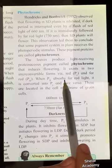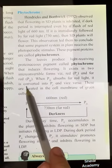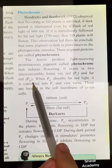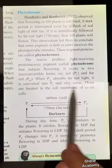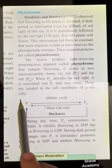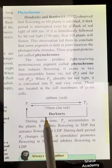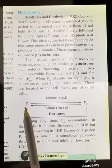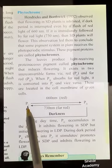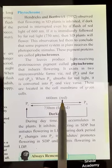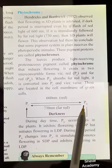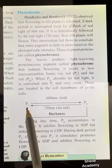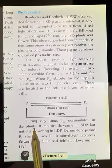When Pfr absorbs far-red light it is converted into Pr, and vice versa — Pr can be converted to Pfr and Pfr can be converted to Pr. They are located in the cell membrane of the green cells. The Pr form absorbs red light at 660 nanometers and is converted into Pfr, which can again be converted back into Pr.